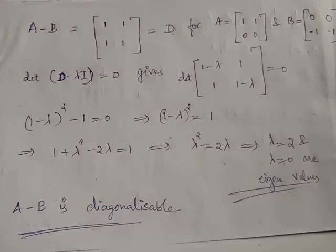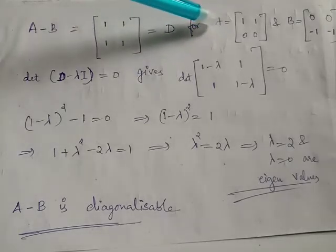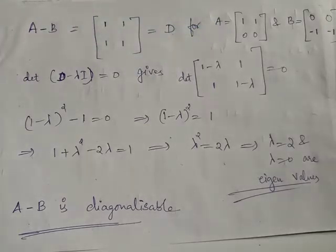Diagonalizable matrices — continuing, if we take the difference between two diagonalizable matrices, say A equals [[1,1],[0,0]] and B equals [[0,0],[−1,−1]], we have A and B are diagonalizable matrices.